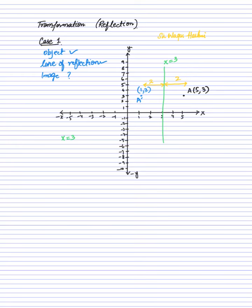Now let's take another example using the same point A, but this time we reflect it across the x-axis, which is our line of reflection. The point will land on the other side of the x-axis. The y-value is 3 units, and since we're moving in the y direction, there is no change in x. So point A' after reflection across the x-axis is 5 comma minus 3.